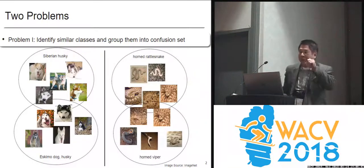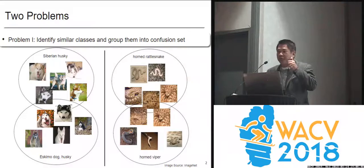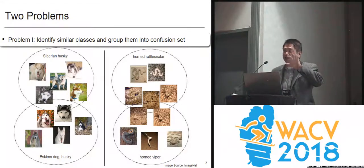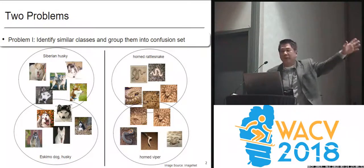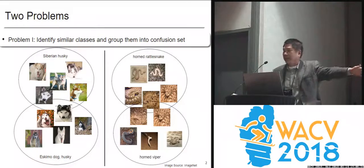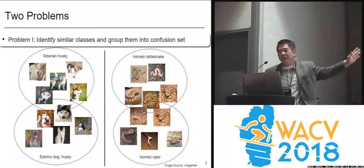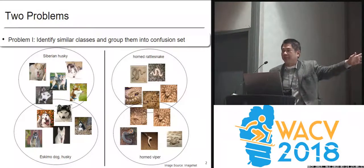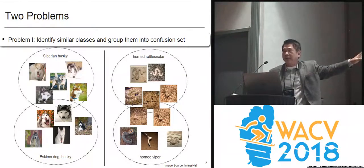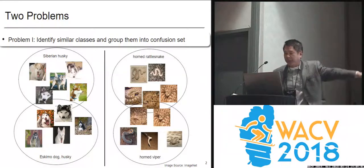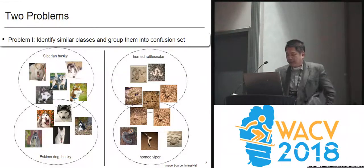There are two problems. The number one problem we want to see is that there are confusion classes. So these are examples: different kinds of dogs, different kinds of snakes. Humans get confused, but computers also get confused. We try to see whether we can find this kind of confusion classes.